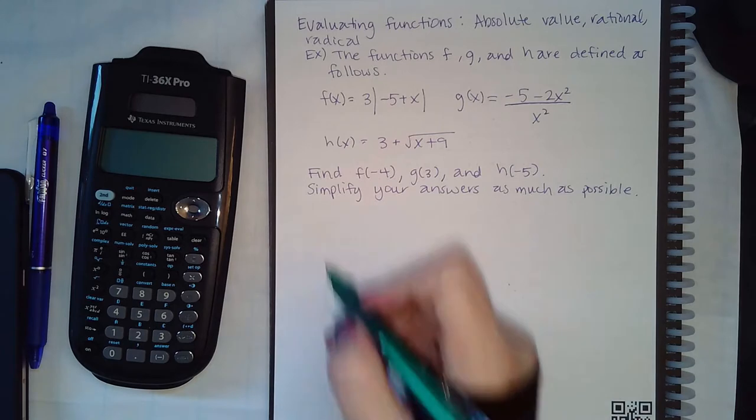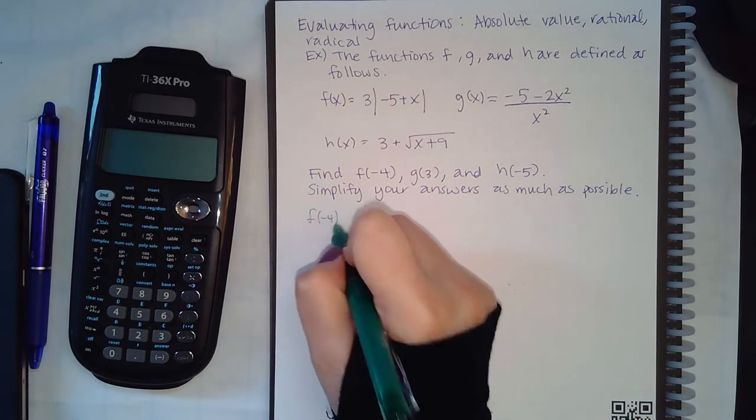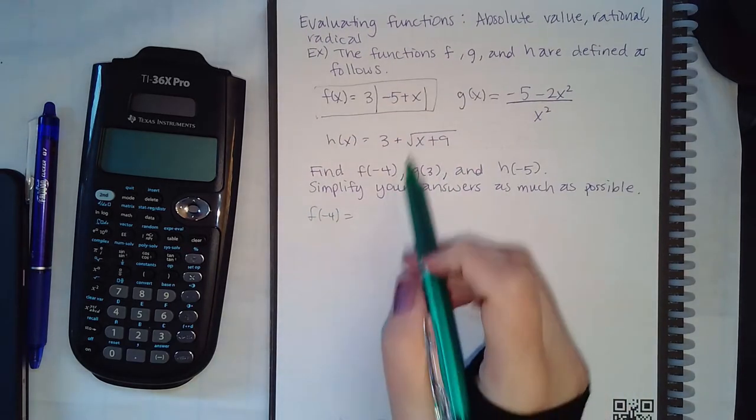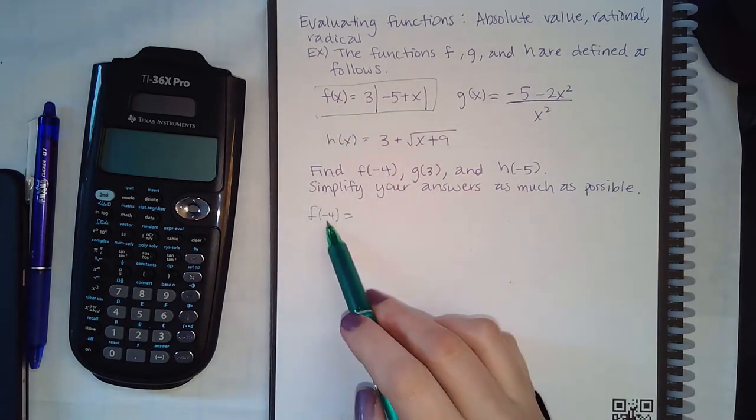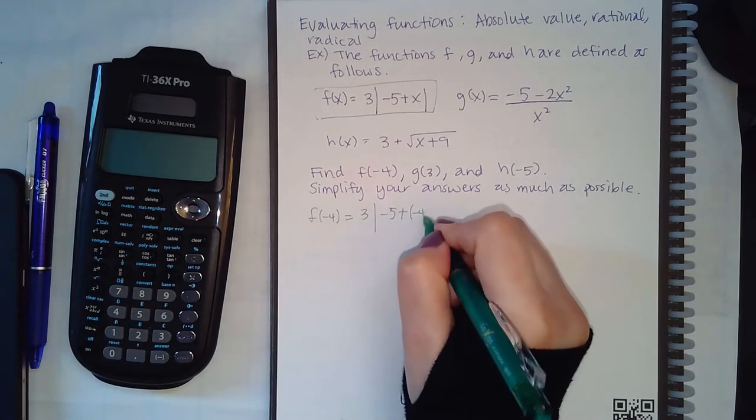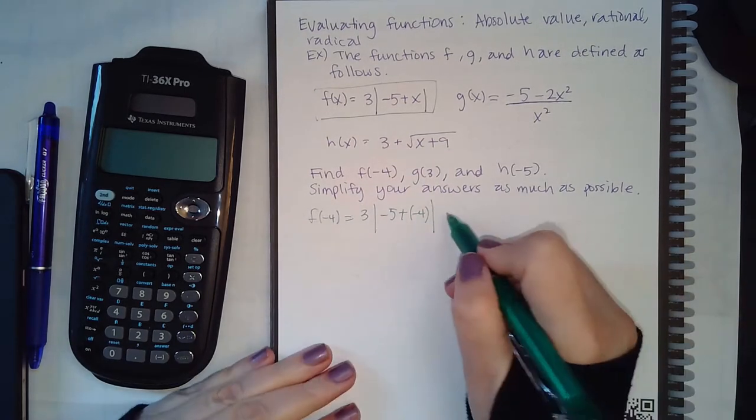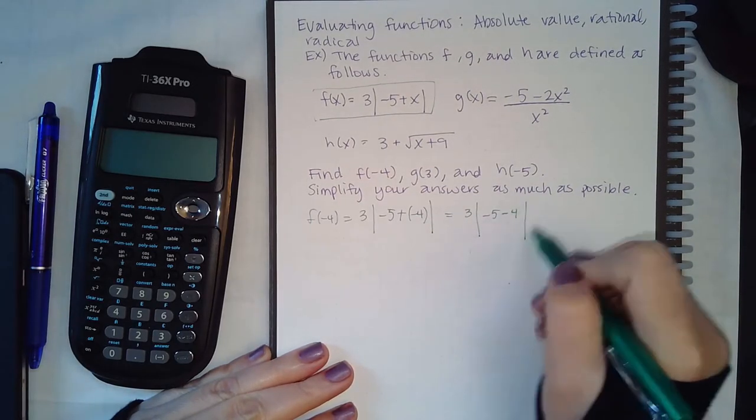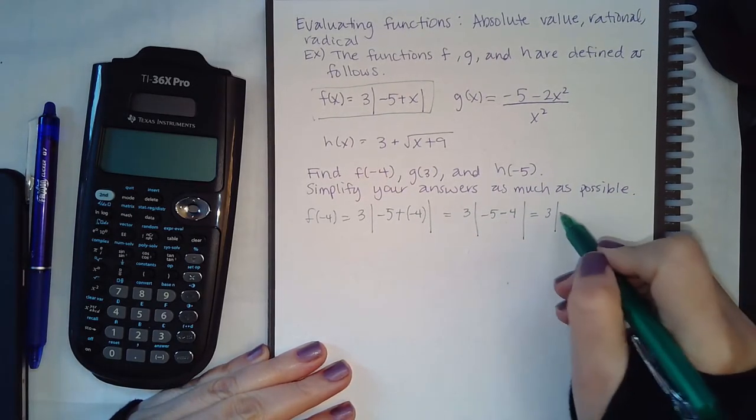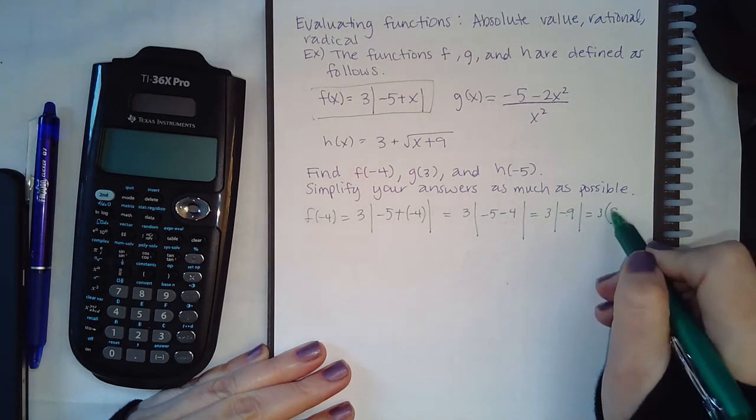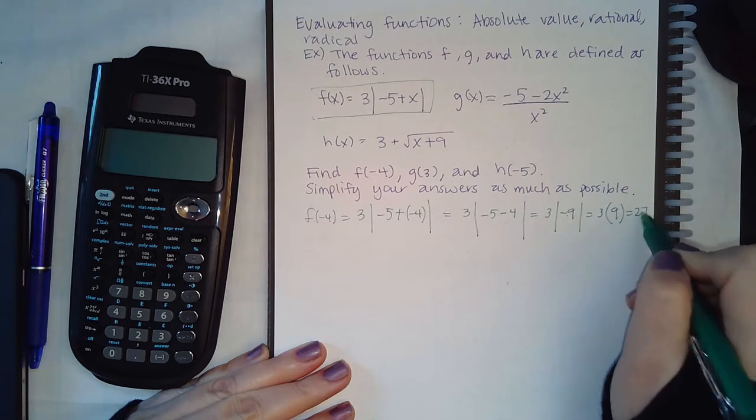For F of negative 4, what that means is I need to be looking at this function and plugging in a negative 4 everywhere I see x. So I plugged in the negative 4 there, now I'm gonna plug in a negative 4 here and then evaluate it. So I get 3 times negative 5 minus 4, which is 3 times the absolute value of negative 9. 3 absolute value of negative 9 is positive 9, so I end up with 27 for F of negative 4.